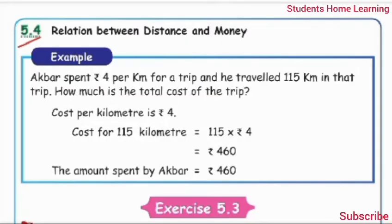Relation between distance and money. Example: Akbar spent Rs. 4 per km for a trip and he travelled 115 km in that trip. How much is the total cost of the trip?